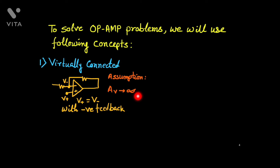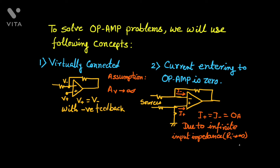The next important concept is that there is no current entering the op-amp, due to the infinite input impedance of the ideal op-amp. Thus, no current can enter: I− equals 0 and I+ is also 0. It looks like they are not connected, but the op-amp can sense the voltage and amplify it.